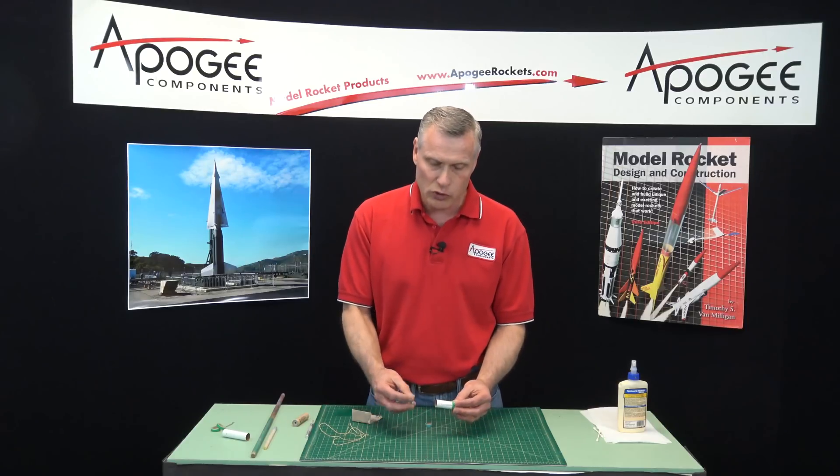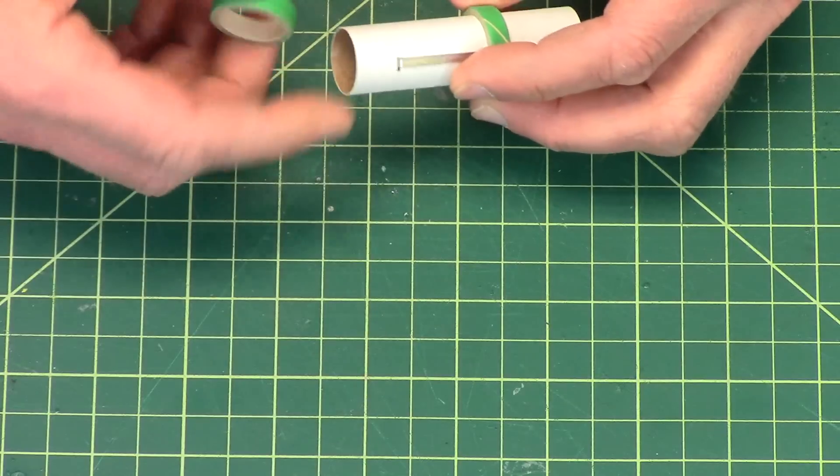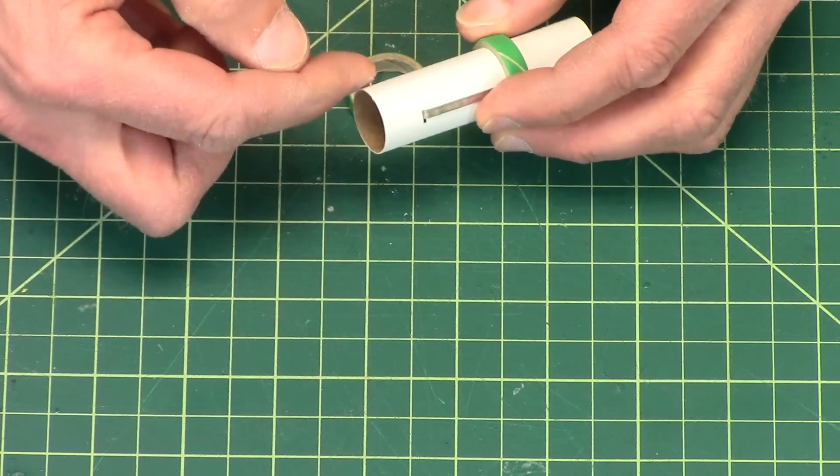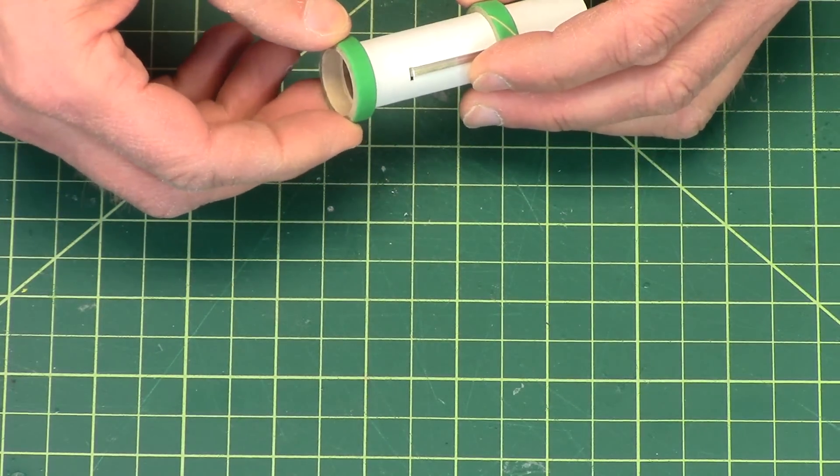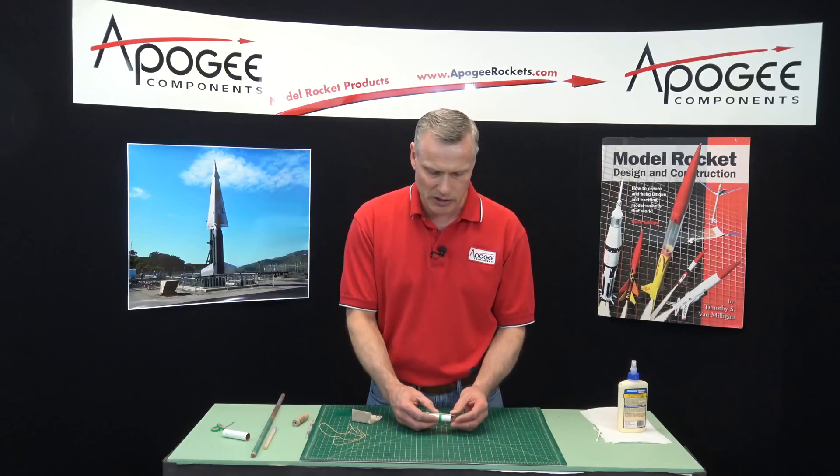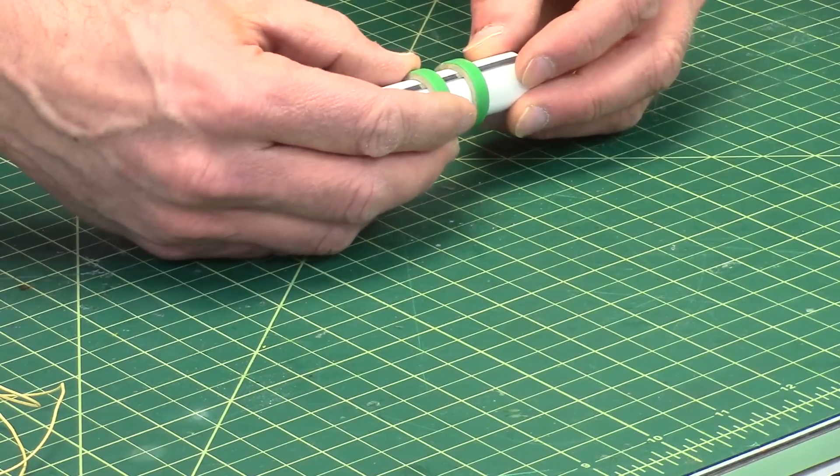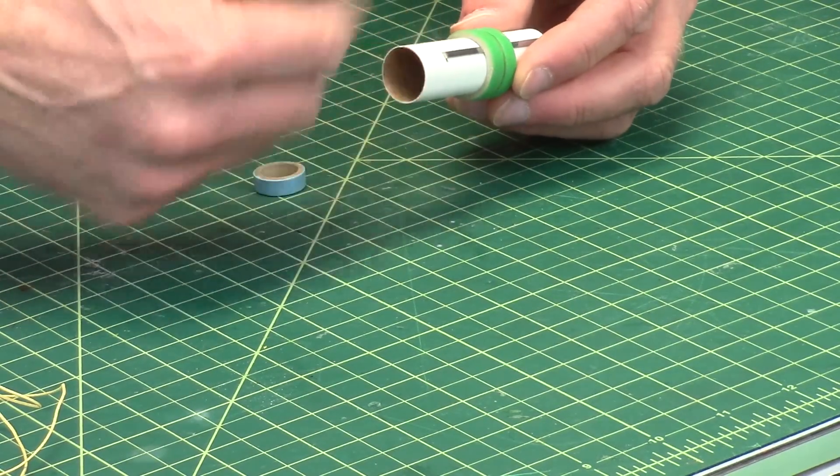Before you put any glue, make sure you have all your rings onto the tube. Because if you put glue around the perimeter of the tube, it's not going to go on very easily. You're going to have a hard time. And a lot of people I've seen crush the tube trying to get it on. So make sure your rings are onto the tube first before you apply glue.